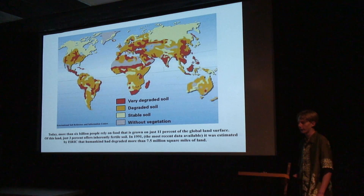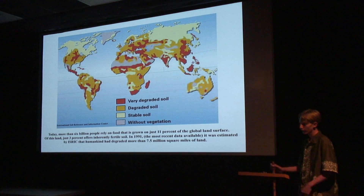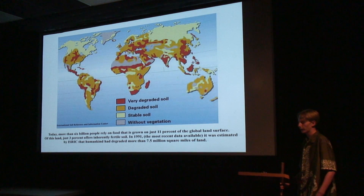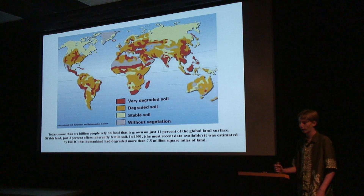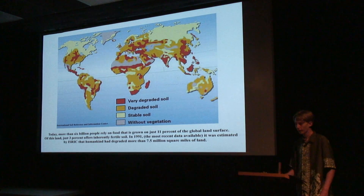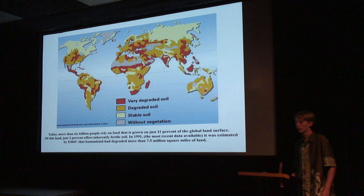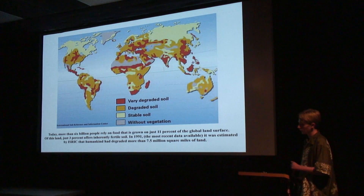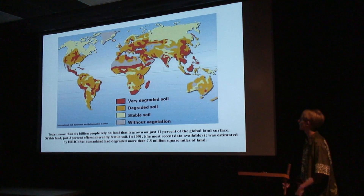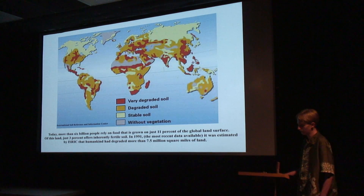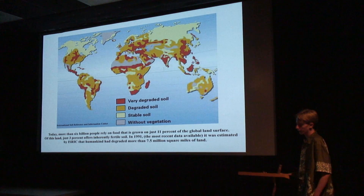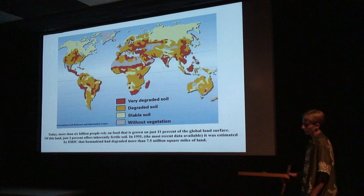More than 99% of the world's food supply comes from the land. As our usable land is shrinking, our population is growing at an alarming rate. Today, more than 6 billion people rely on food that is grown on just 11% of the global land surface. Of this land, just 3% offers inherently fertile soil.